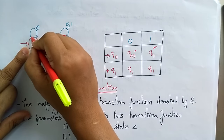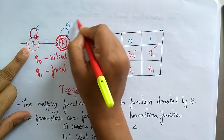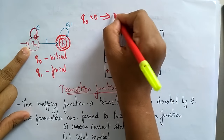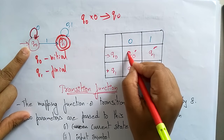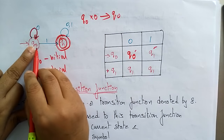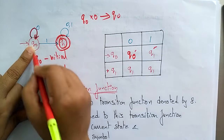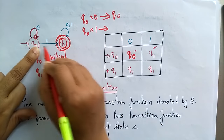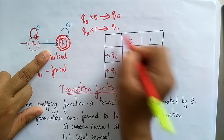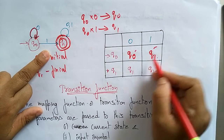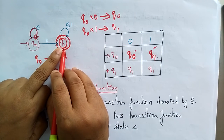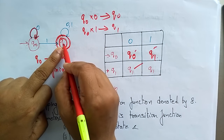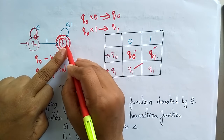Now fill in the entries. Q naught on input 0 goes to q naught itself, so write q naught. Q naught on input 1 goes to q1, so write q1. Q1 on input 0 goes to q1, and q1 on input 1 also goes to q1. That is how you write the transition table from the transition diagram.